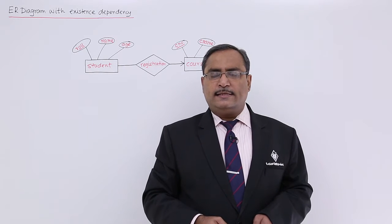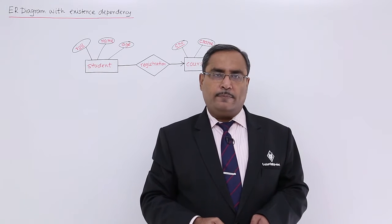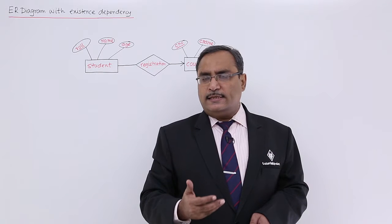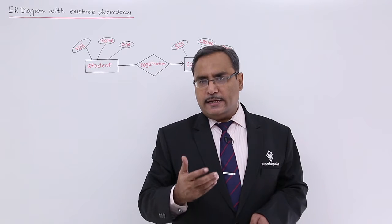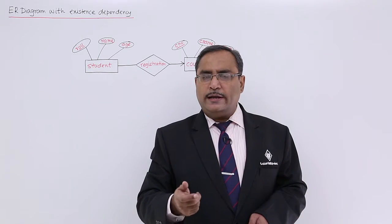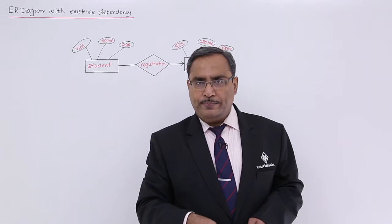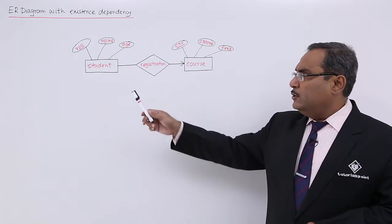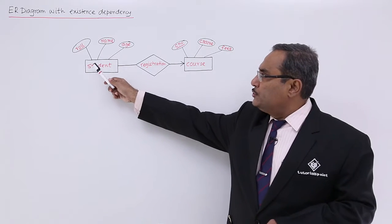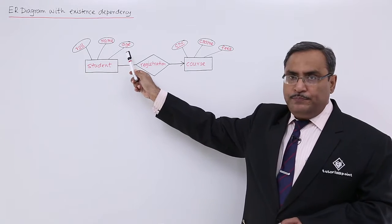Let us discuss existence dependency in ER diagrams. What is existence dependency in the ER diagram? To explain this, let us go through one example. Here we are having one entity called student with three attributes: roll number, name, and age.